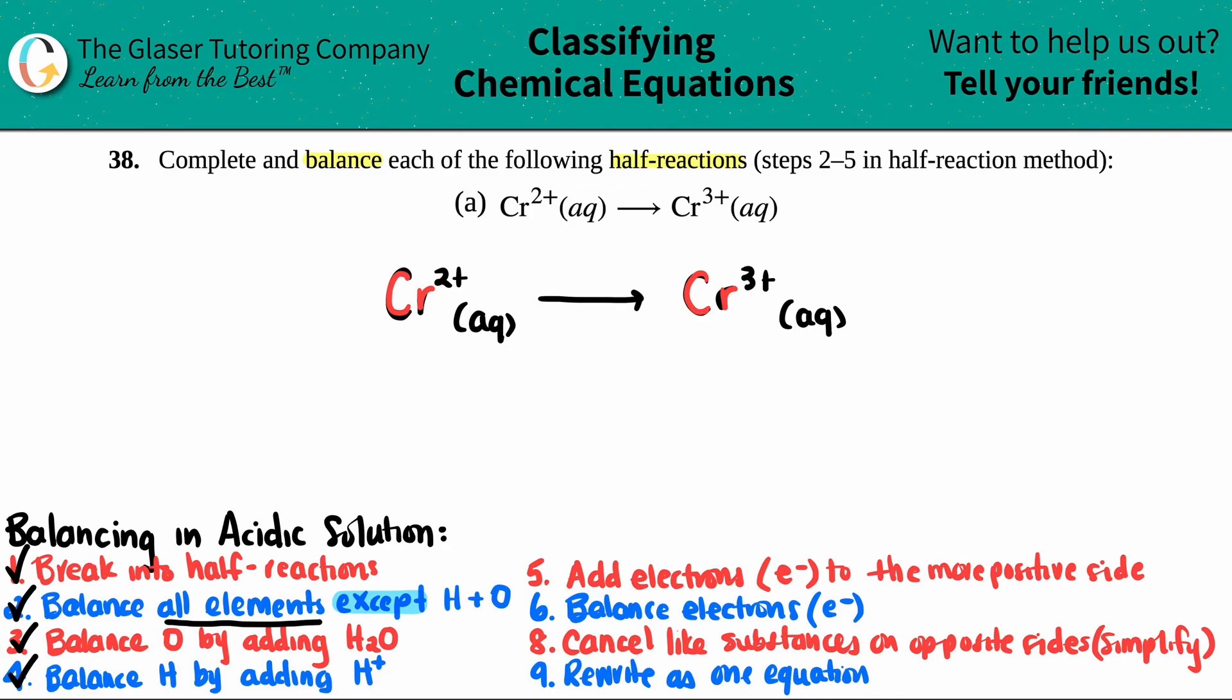And now we come down to the part that we always have to do. We always have to check to see if the charges are balanced. And in order to do that, we have to add electrons, which are E negative. Remember, electrons are negative. You're always going to add electrons to the more positive side. You're going to bring it down to the more negative side.